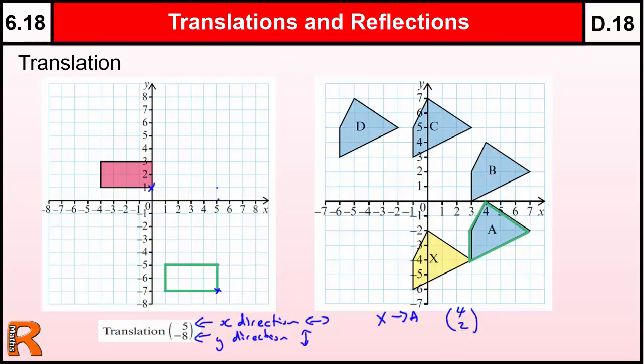So if we were going from x to d, for example, a slightly trickier one, we'd actually have to move to the left, 1, 2, 3, 4, 5 to get it underneath, and then up 1, 2, 3, 4, 5, 6, 7, 8, 9. So we'd go 5 to the left, we'd go from x to d, we would go 5 to the left, which is minus 5. We want to go to the left, and then we're going to go up 11.